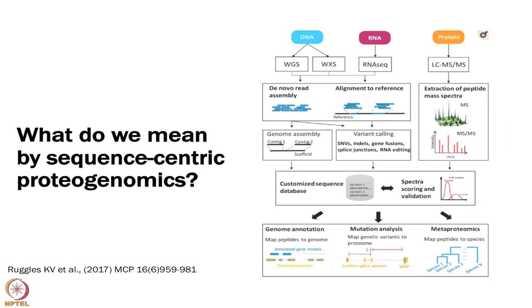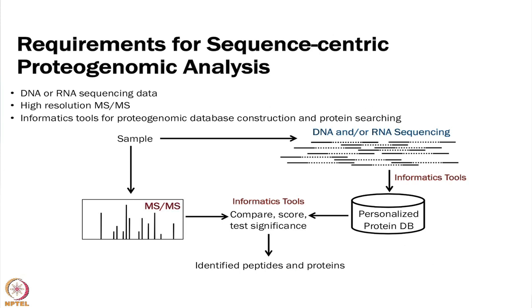Whether that means genome annotation or looking at actual mutation analysis specifically in tumor samples, you can also use this for metaproteomics in microbiomes. There are a couple of requirements: you need DNA or RNA sequencing — if you have both you can use both in different ways — some sort of high-resolution mass spec data, and then the actual tools to combine these.